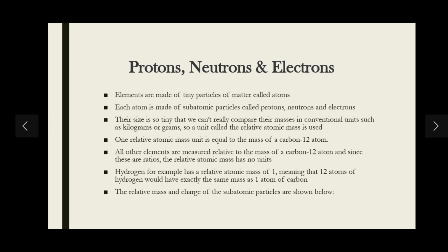The first concept is about the subatomic particles of an atom: protons, neutrons, and electrons. Elements are made up of tiny particles of matter called atoms. Atoms are the smallest particles of a chemical element that can exist. Elements are substances composed of just a single type of atom — for example, carbon is made of only carbon atoms, and oxygen is made of only oxygen atoms.